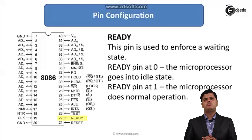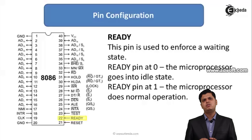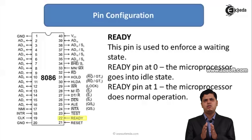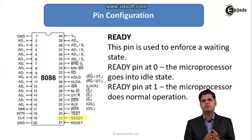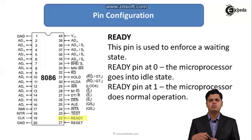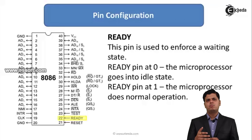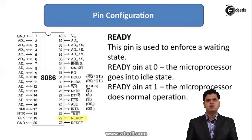The next pin is the READY pin, used to enforce a waiting state. When the ready pin is 0, the microprocessor goes into idle mode. When the ready pin is 1, the microprocessor performs normal operation. Whenever the microprocessor is interfaced with I/O devices or memory, the speed of the microprocessor and the interfacing devices may differ, so we use this ready signal to insert wait states or put the 8086 into idle mode.